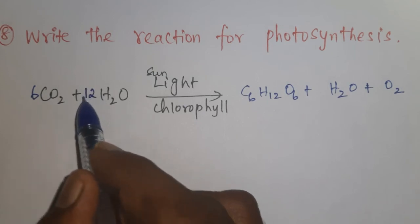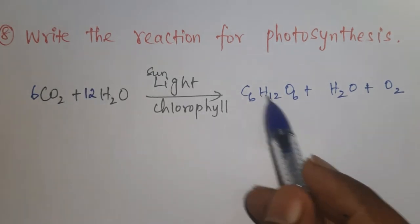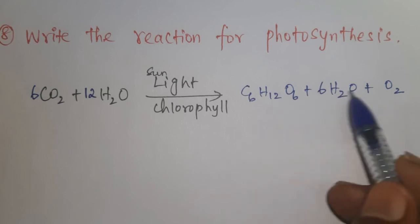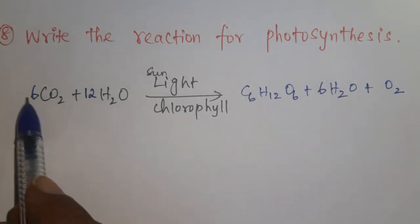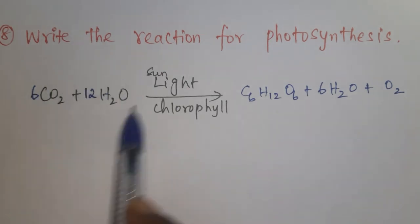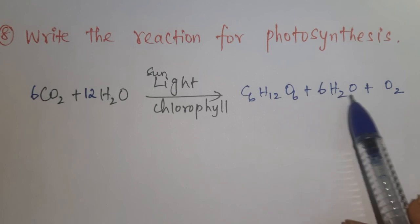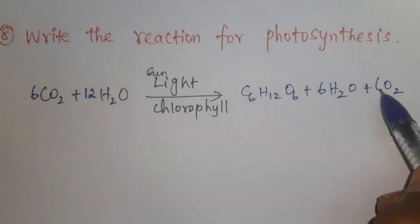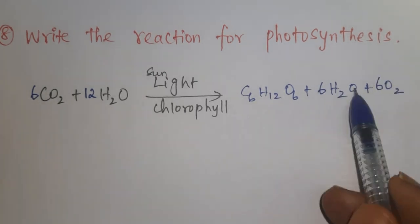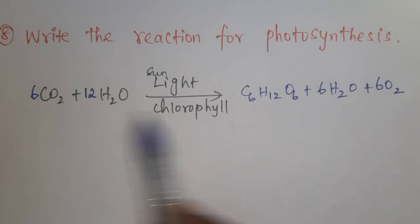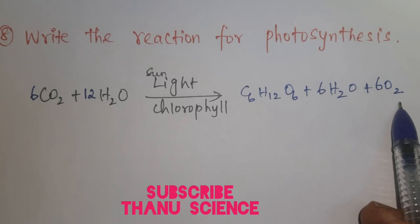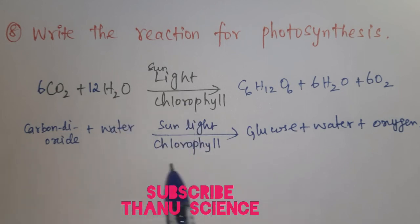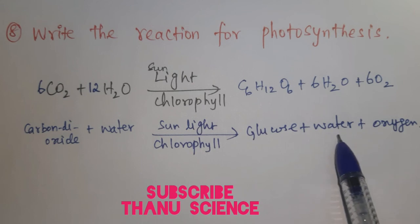To balance hydrogen, we substitute 12 before H2O on the reactant side, giving 24 hydrogen. On the product side, 12 hydrogen in glucose and 6 water gives 12 hydrogen, totaling 24. To balance oxygen: 6 CO2 gives 12 oxygen and 12 H2O gives 12 oxygen, totaling 24 on the reactant side. On the product side, glucose has 6, water has 6, and 6 O2 gives 12, totaling 24. The equation is now balanced: 6CO2 + 12H2O → C6H12O6 + 6H2O + 6O2.